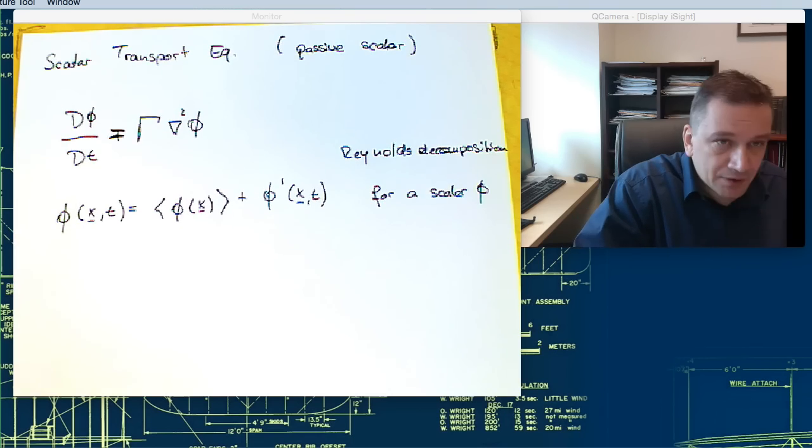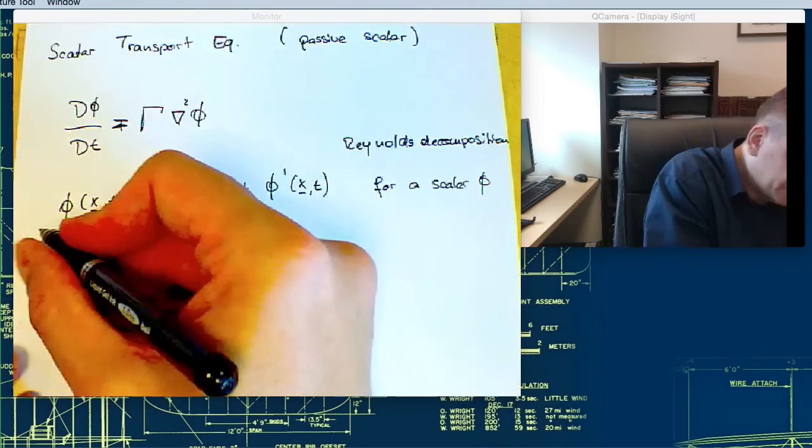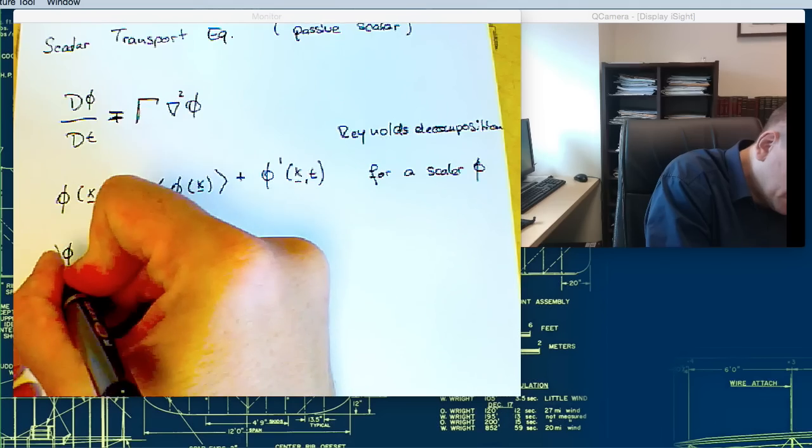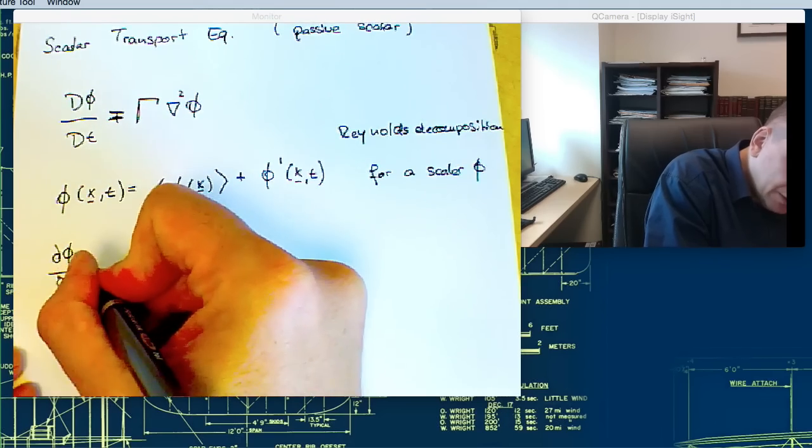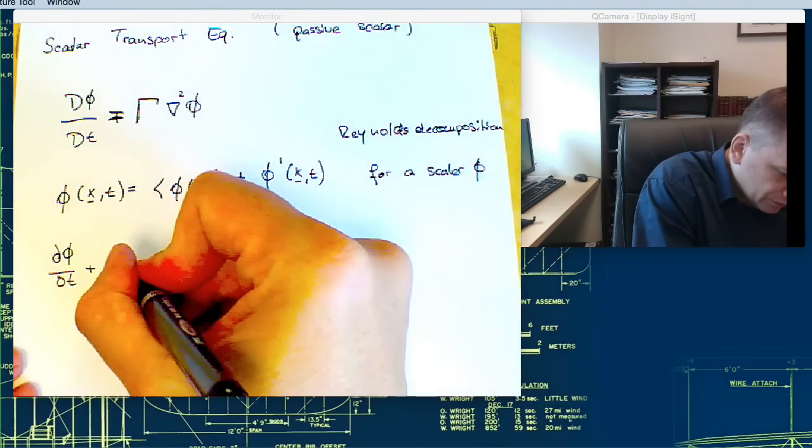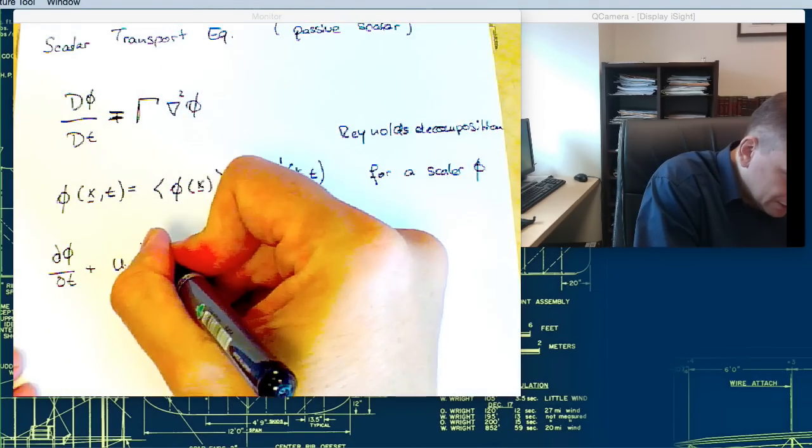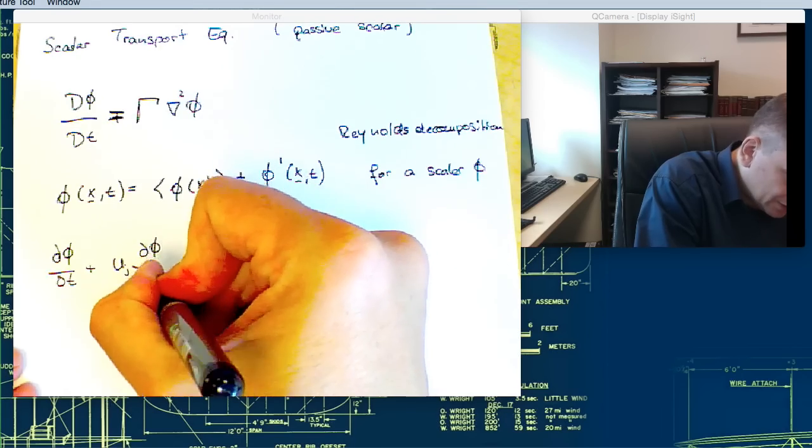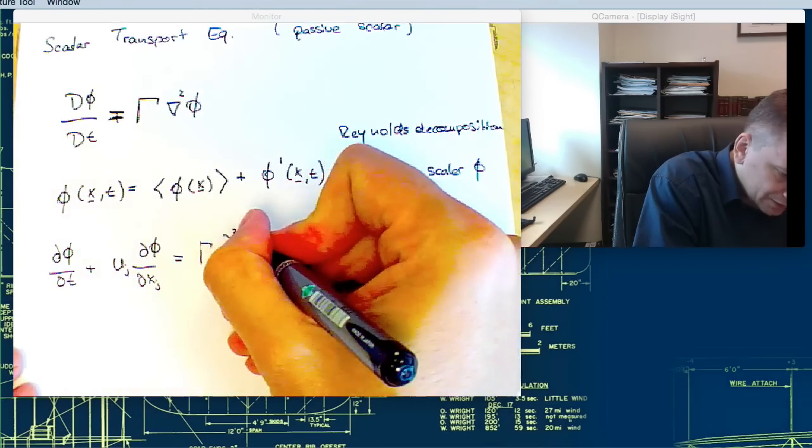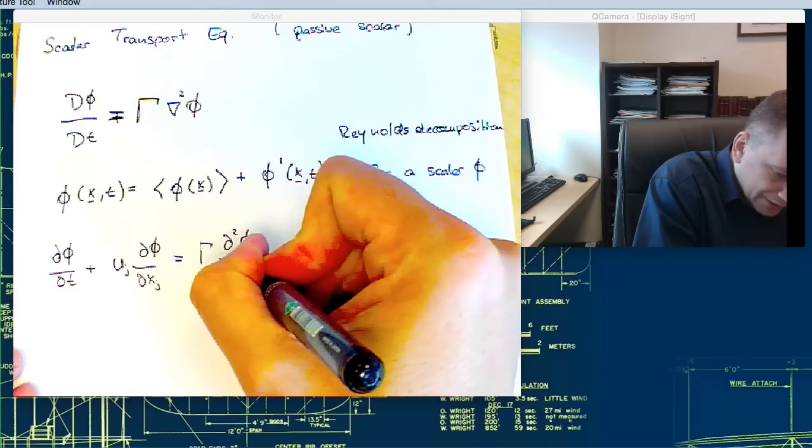Let's write that out in index form. dφ/dt plus u_j ∂φ/∂x_j equals γ ∂²φ/∂x_j².